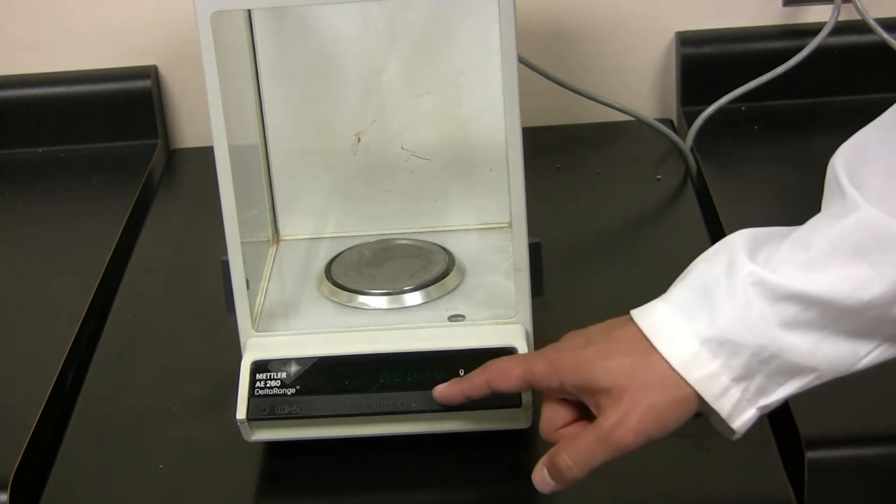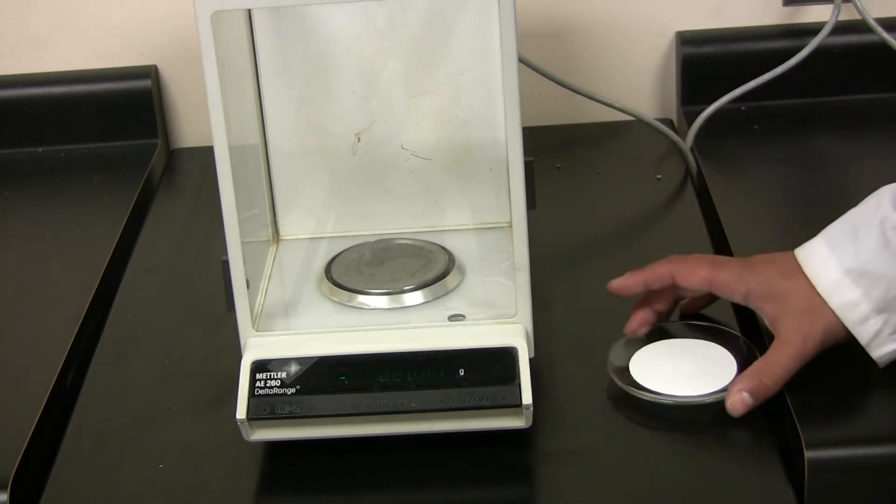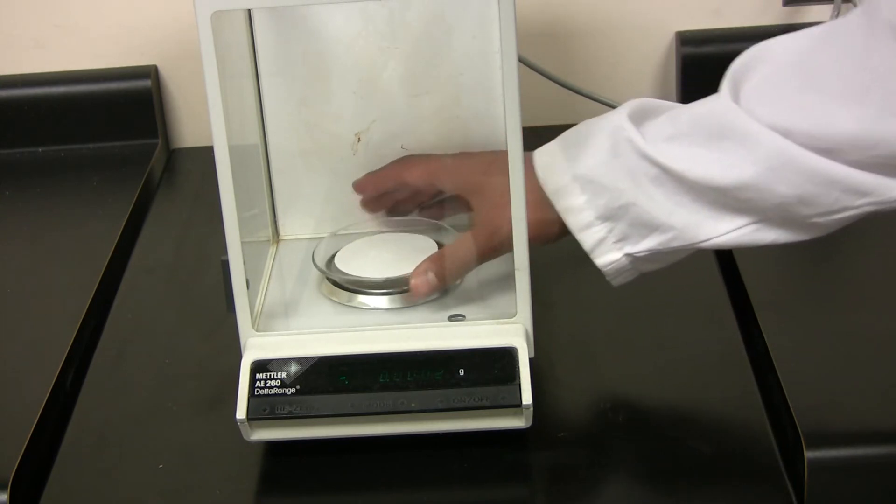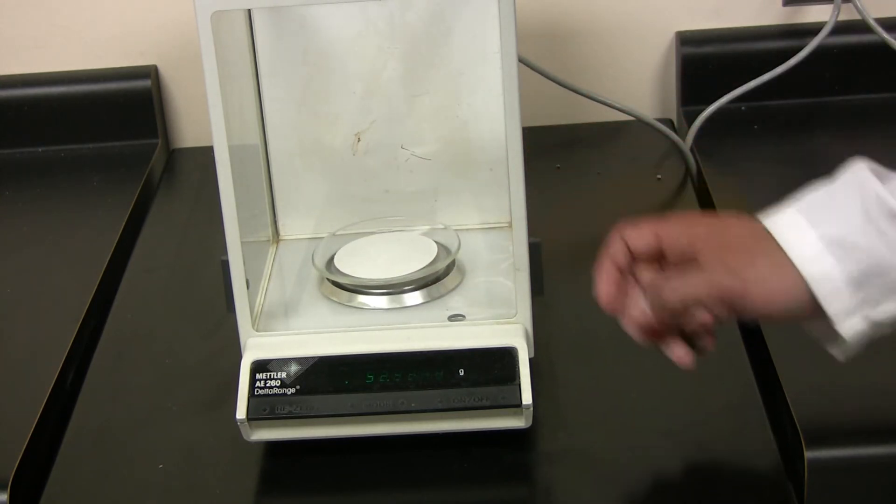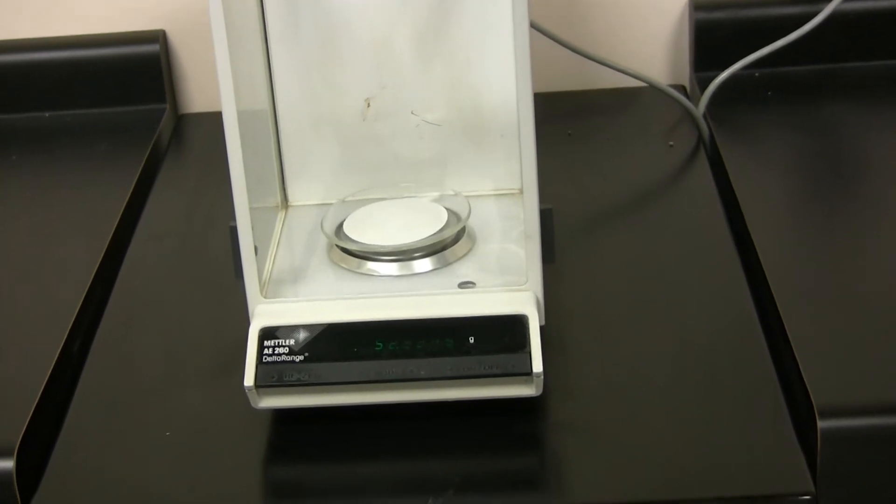Start off by taring the analytical balance. Next, place the watch glass and filter paper embedded with crystals. Subtract this from the empty filter paper to get the total weight of crystals.